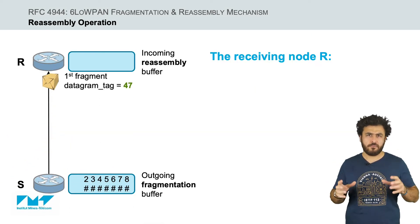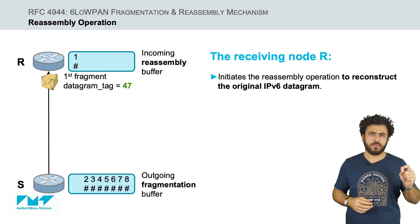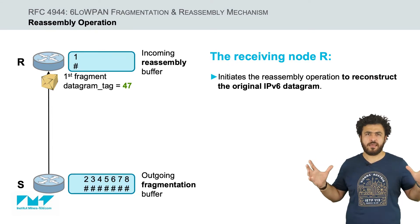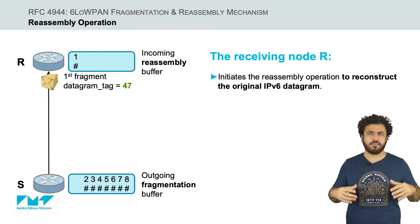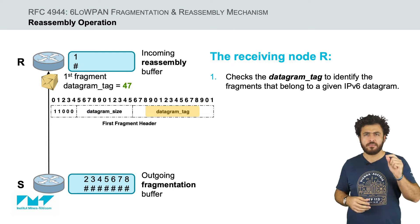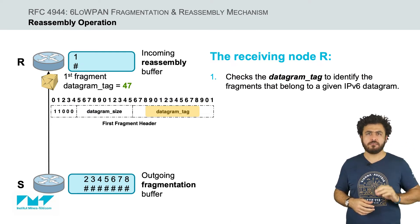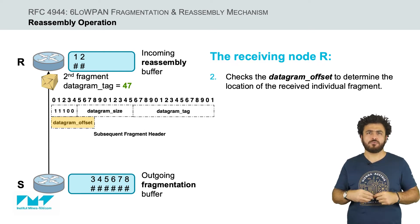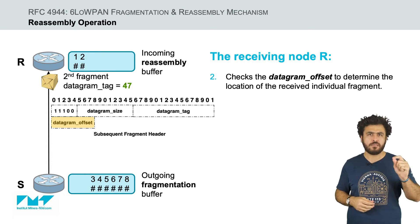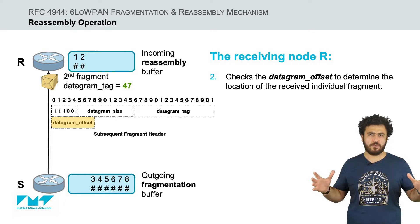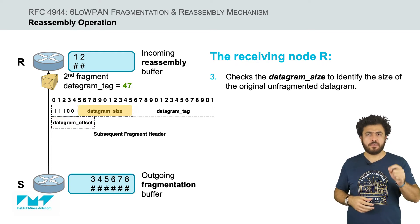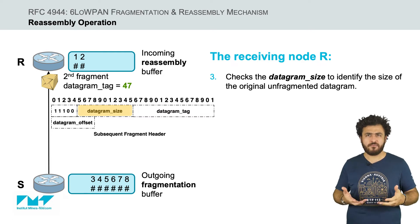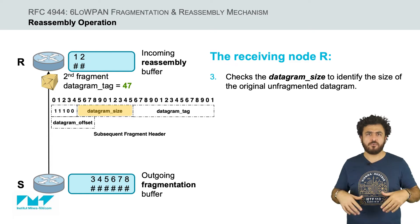The receiving node, upon receipt of a fragment, initiates the reassembly operation to reconstruct the original unfragmented IPv6 datagram, whose size is datagram size. Towards the same, the receiver checks the datagram tag field to identify all the fragments that belong to a given IPv6 datagram. Next, it checks the datagram offset to determine the location of the received individual fragment within the original unfragmented datagram. Finally, the receiver checks the datagram size field to identify the size of the original unfragmented datagram and consequently the size of the reassembly buffer.